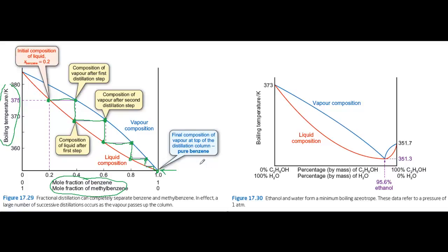But rather than do a series of separate distillations, you can use a fractionating column, like the one in figure 17.28, which effectively does an infinite series of distillations in the vertical glass column, so that the distillate comes out at the top and the residue is left in the flask.